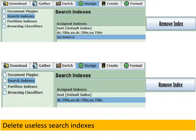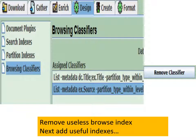Before creating the new indexes, let's get rid of the useless ones. The ex-source, which is the file names, must always be deleted. A title index really doesn't return much more value over the full-text search engine, so delete that as well. After deleting those two useless search indexes, delete the useless browse index, which is the ex-source or file name index.